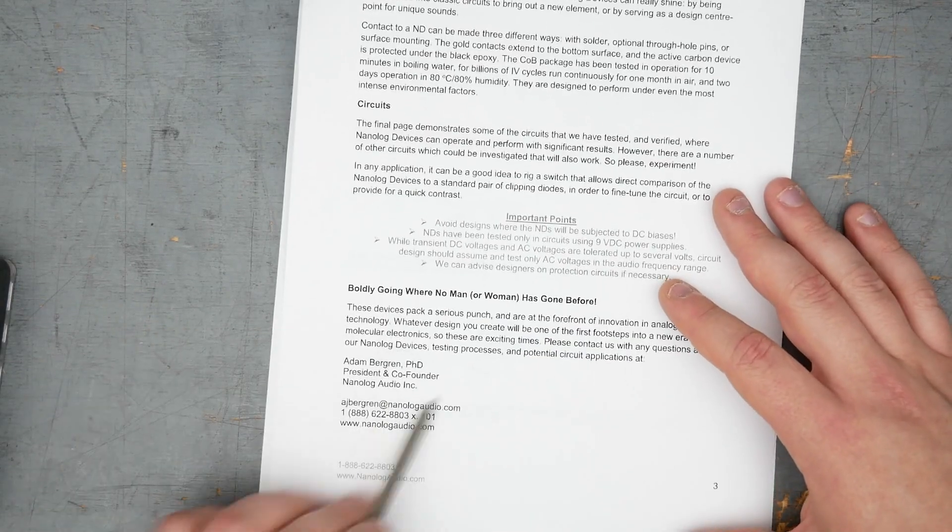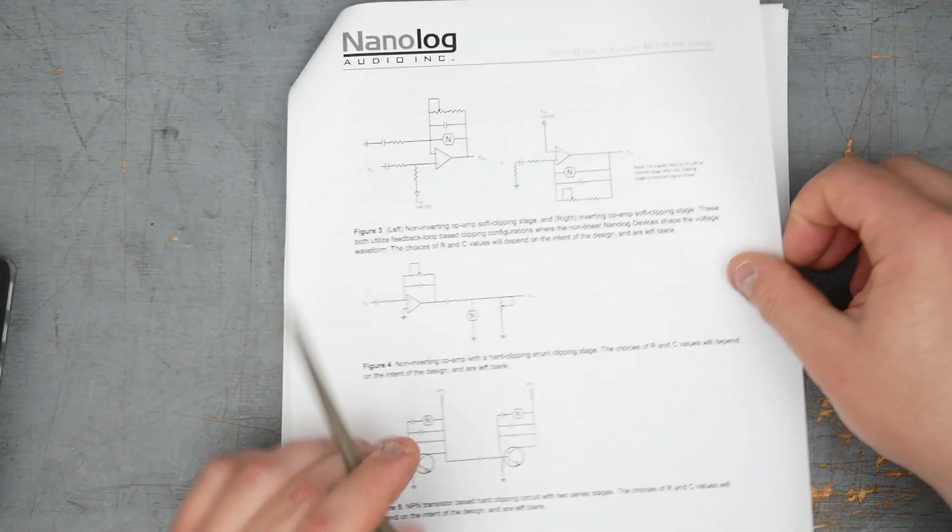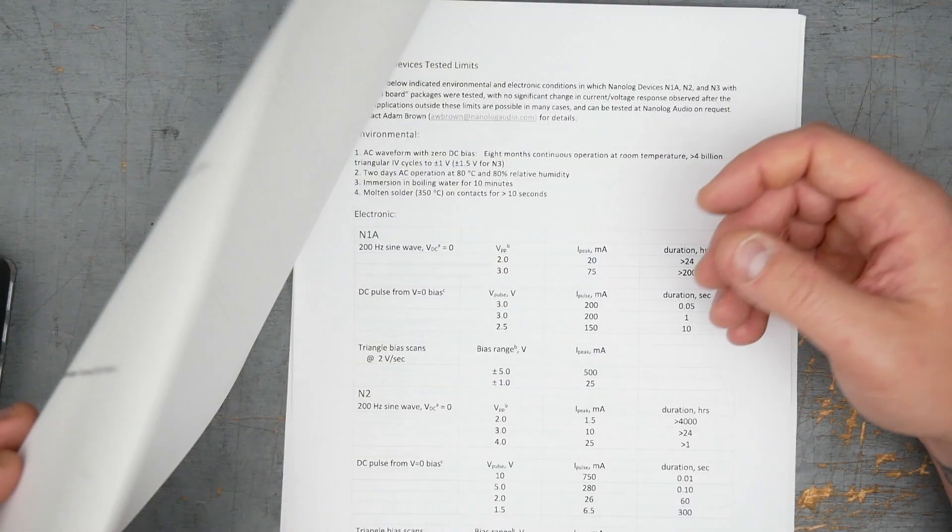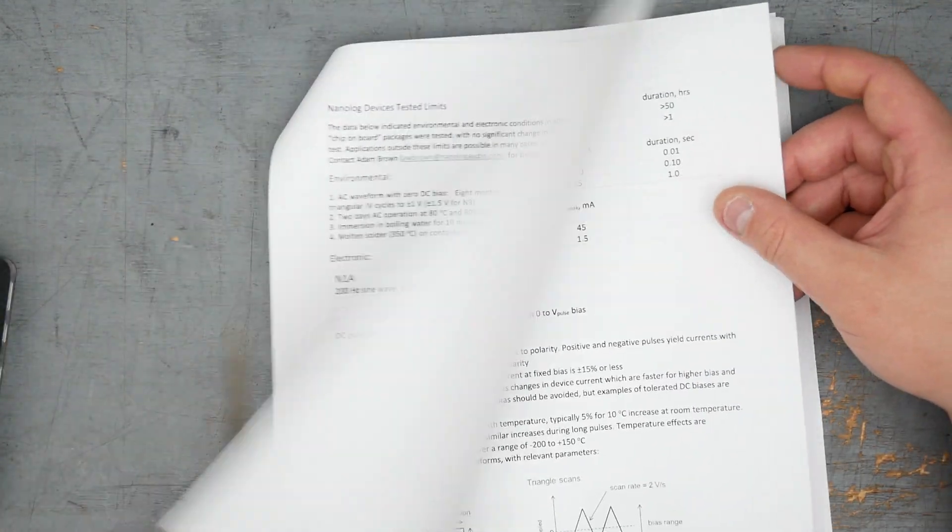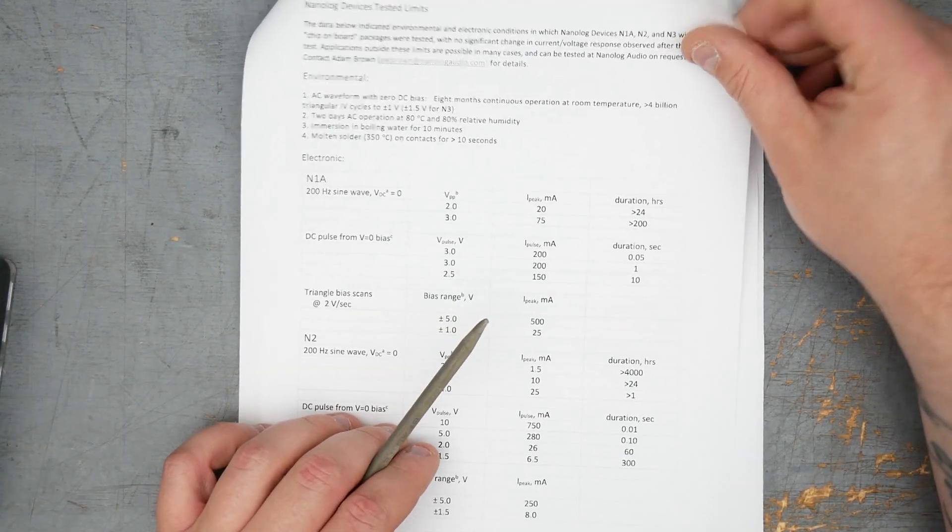It does say that DC voltages and AC voltages are tolerated up to several volts. Circuit design should assume and test only AC voltages in the audio frequency range. And then it gives some more suggested test circuits or trial circuits for the devices, and then some just some more like electrical specs and whatnot. Like I said, unfortunately, these devices don't seem to be available anymore. So even if you wanted to test with them, it doesn't seem like you can really get them. But I'll put a link to this in the description as well.